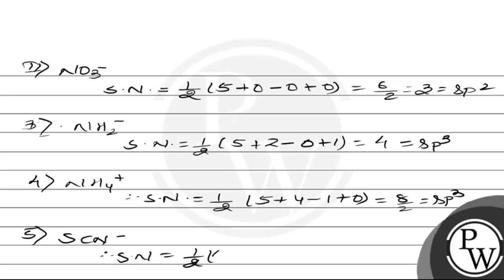The fifth species is SCN⁻. The steric number of SCN⁻ is half the valence electrons of S (which is 4), plus the number of monovalent atoms, minus cationic charge, plus anionic charge, giving 2. This corresponds to sp hybridization. Note that the minus sign is on N, not on CN — the cyanide ion structure means it is not included in the monovalent count.